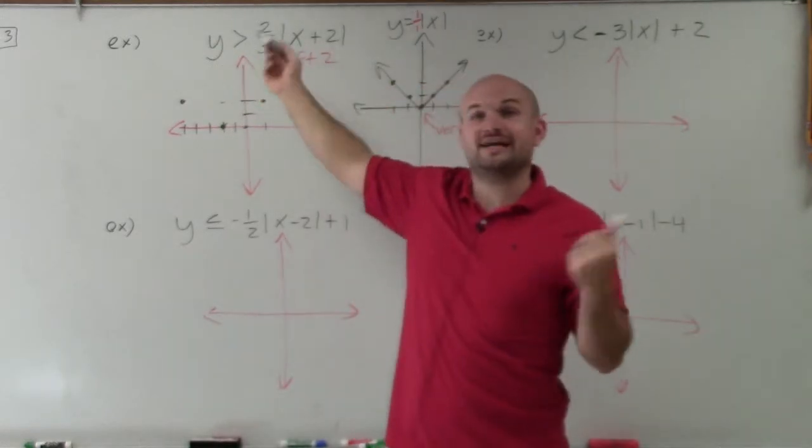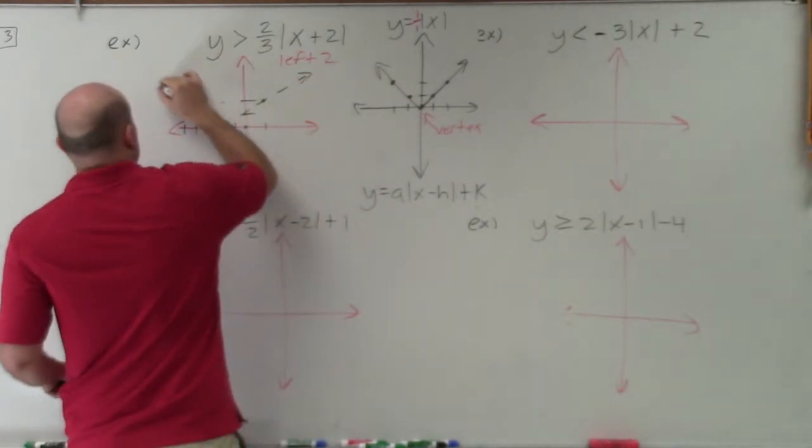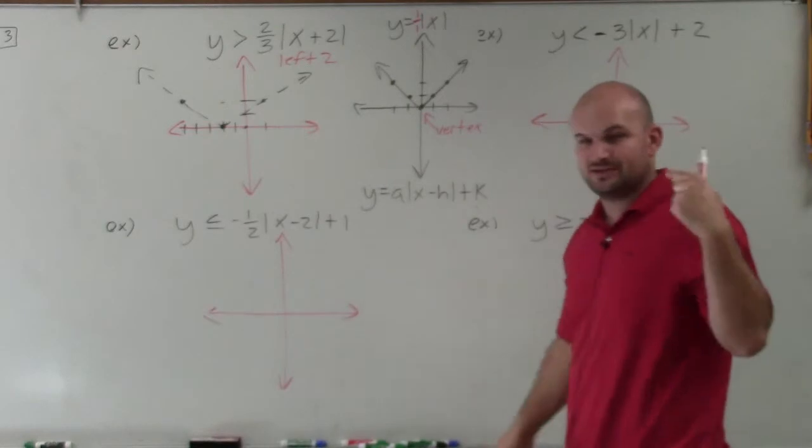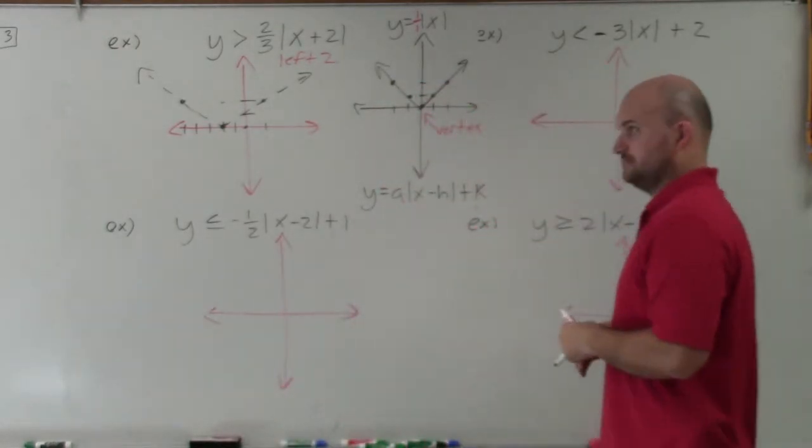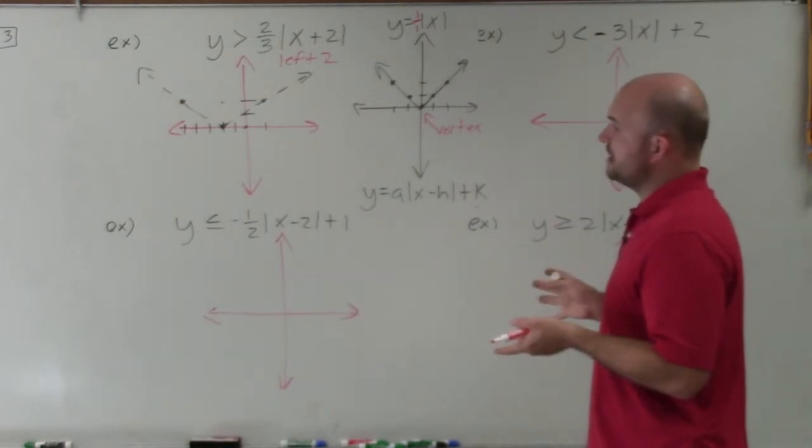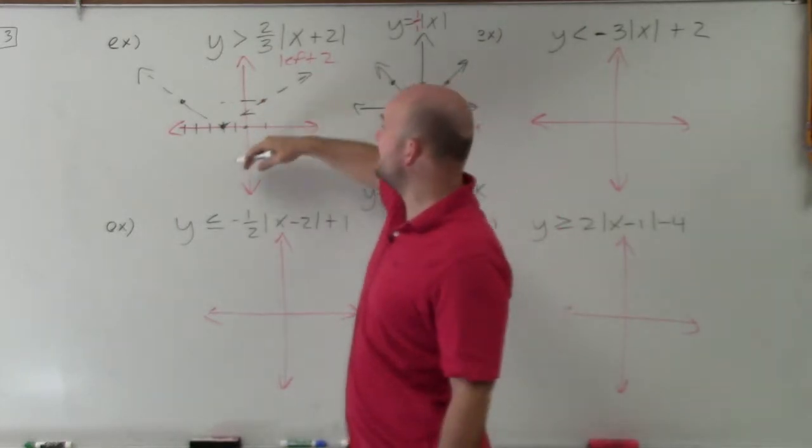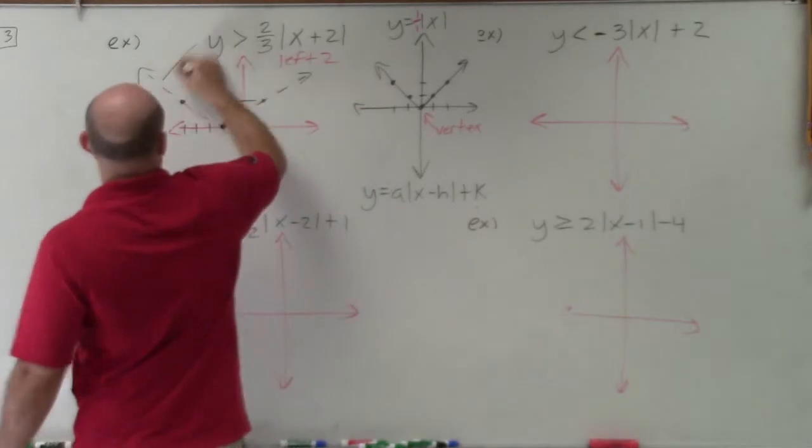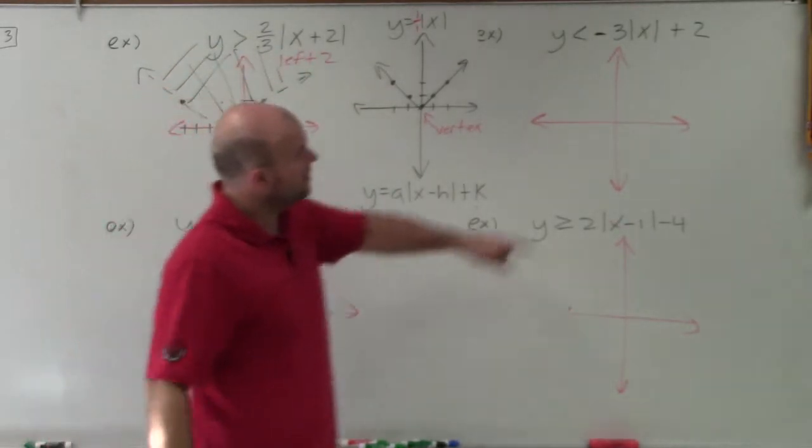This is y is greater than. So therefore, that means my boundary line is not going to be a part of my solution. It's going to be a dashed boundary line. And it's saying y is greater than, so that means all the y coordinates that are going to be greater than this boundary line. So all the points that are going to make this solution true are going to be above.